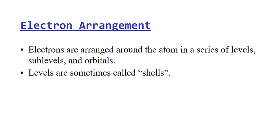The first thing we need to remember about electrons is they're arranged around the atom in a series of levels, sub-levels, and orbitals. Within those orbitals you can hold up to two electrons. Levels are often called shells, so you'll hear me call them shells, then sub-shells, then orbitals.